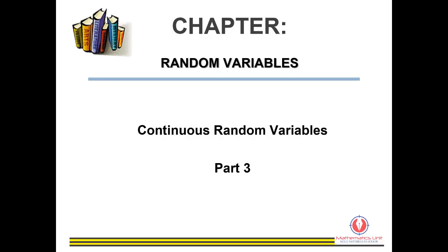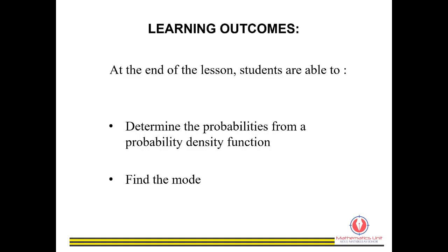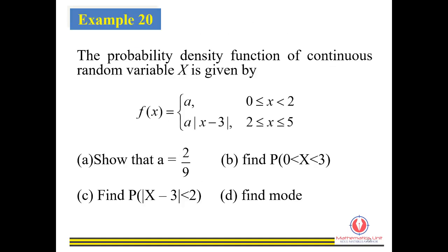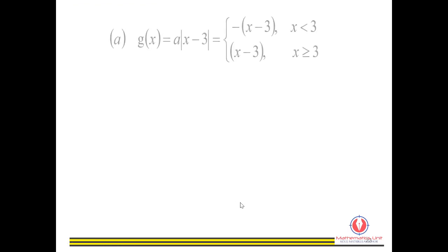We continue with Continuous Random Variables Part 3. The learning outcomes for this video are the exercise given from the previous video — question A and B — which are: how to show that a equals 2 over 9, how to find a probability, and lastly how to find the mode.